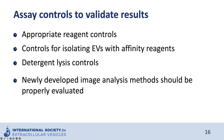Several assay controls are recommended to validate results. Appropriate reagent controls should be included — for example, affinity reagents used to label EVs should be specific and have high binding capacity, used with optimized protocols. If EVs are being affinity-isolated onto surfaces, affinity controls or non-fouling surfaces should be assessed. Detergent lysis controls are recommended, especially when new protocols are developed, as they allow EVs to be distinguished from potential protein aggregates. Finally, newly developed image analysis methods should be properly evaluated.